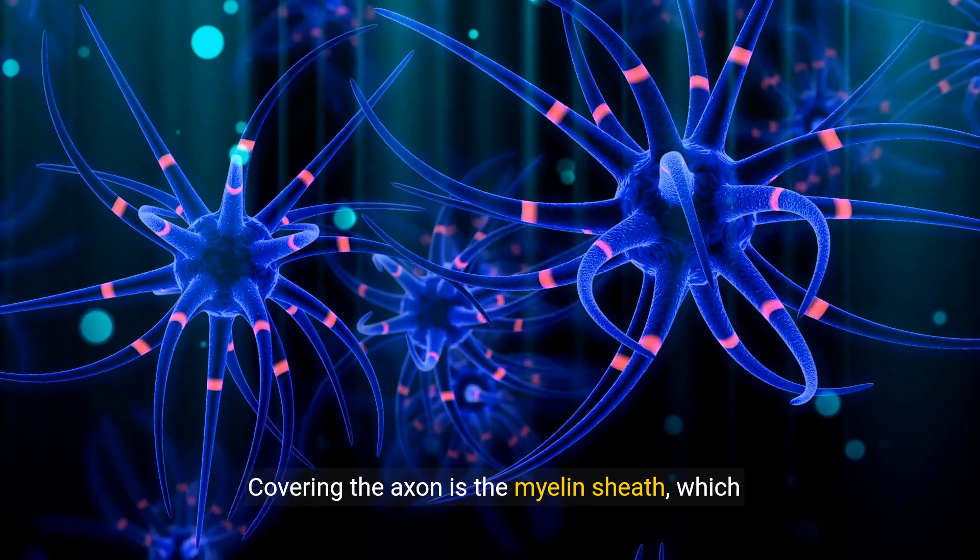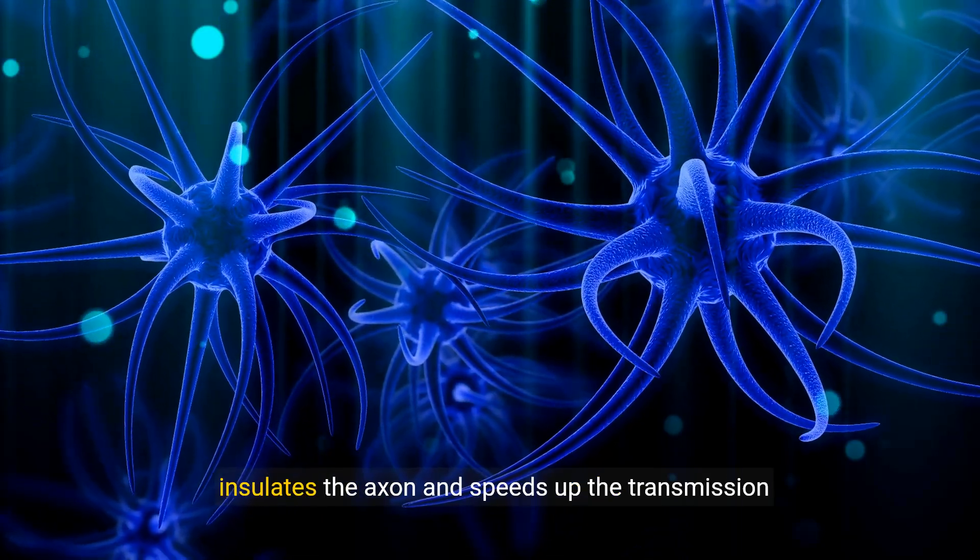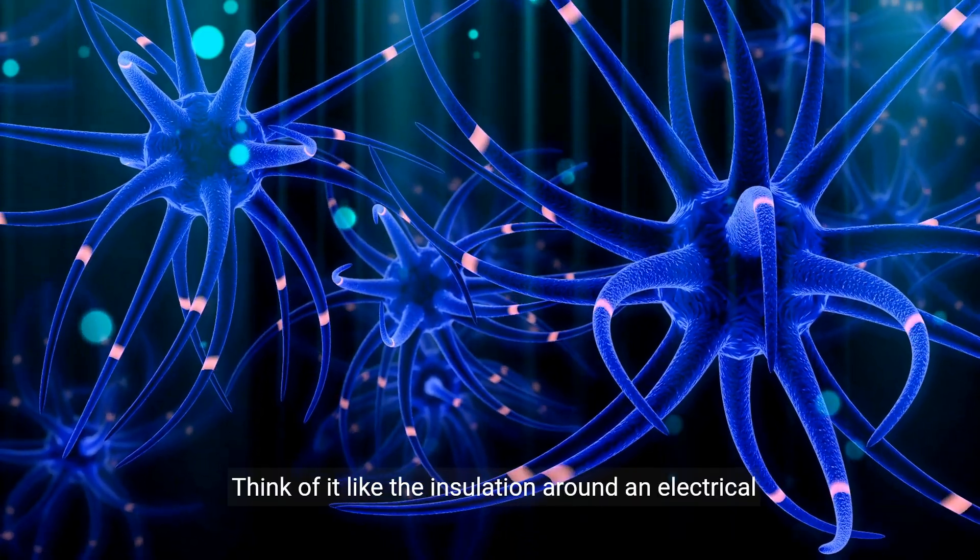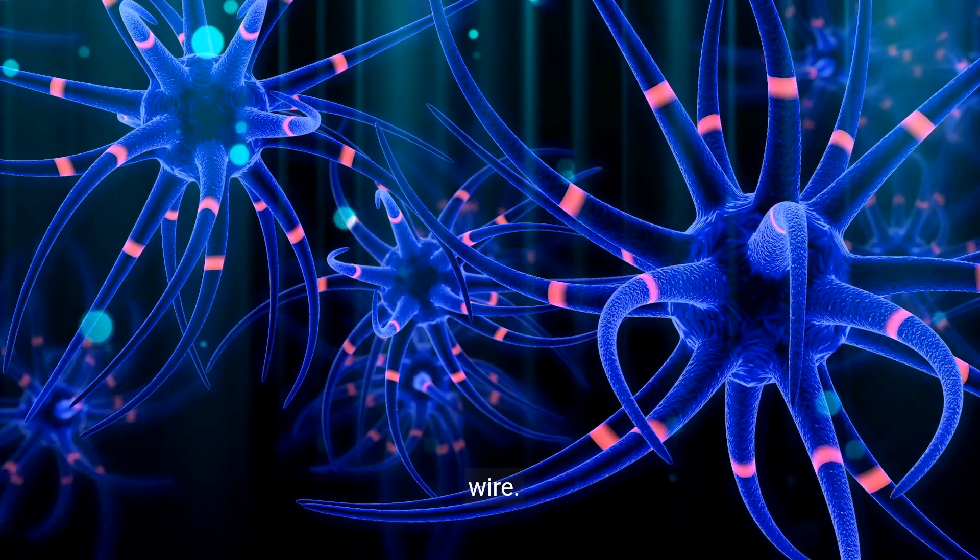Covering the axon is the myelin sheath, which insulates the axon and speeds up the transmission of neural impulses. Think of it like the insulation around an electrical wire.